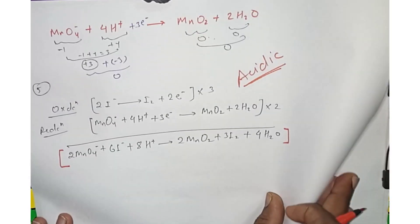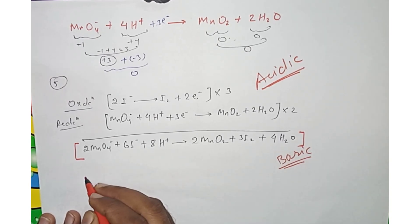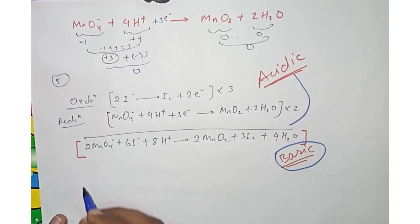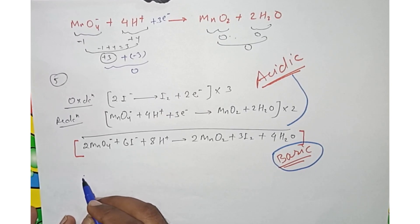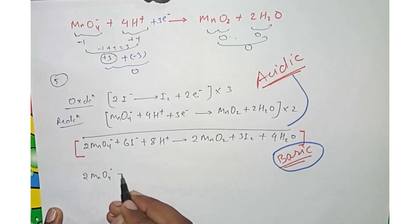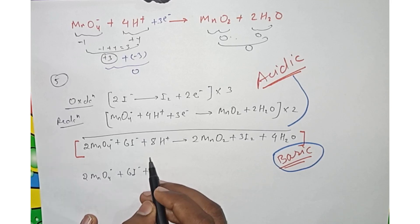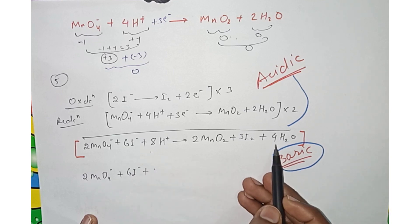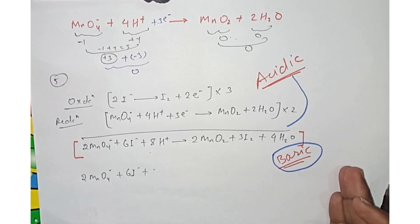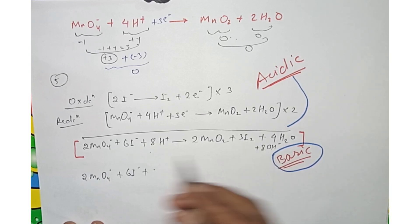Now for basic conditions: this is a basic solution, so we convert the balanced acidic equation to basic. Add OH⁻ to both sides to neutralize the H⁺. We add 8OH⁻ to both sides, converting 8H⁺ plus 8OH⁻ into 8H2O on the left side.